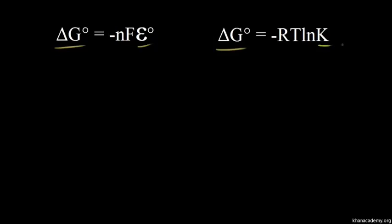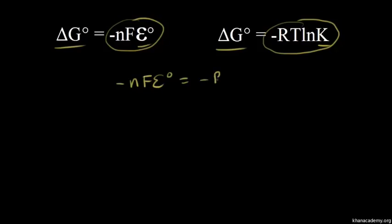So we can set these equal to each other to relate the standard cell potential to the equilibrium constant. Since both of these are equal to delta G zero, we have negative NF E zero is equal to negative RT natural log of the equilibrium constant, K.